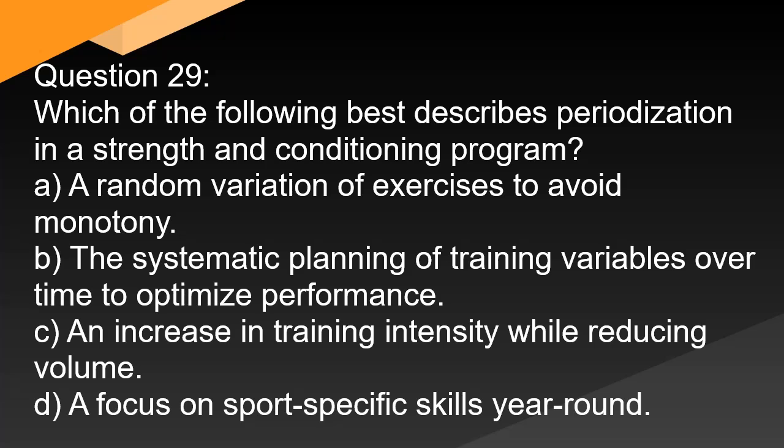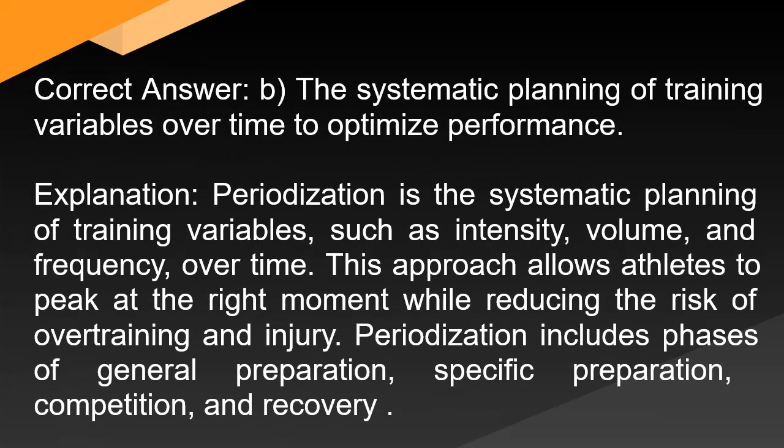Question 29: Which of the following best describes periodization in a strength and conditioning program? A. A random variation of exercises to avoid monotony. B. The systematic planning of training variables over time to optimize performance. C. An increase in training intensity while reducing volume. D. A focus on sport-specific skills year-round. Correct answer: B. Periodization is the systematic planning of training variables such as intensity, volume, and frequency over time. This approach allows athletes to peak at the right moment while reducing the risk of overtraining and injury. Periodization includes phases of general preparation, specific preparation, competition, and recovery.